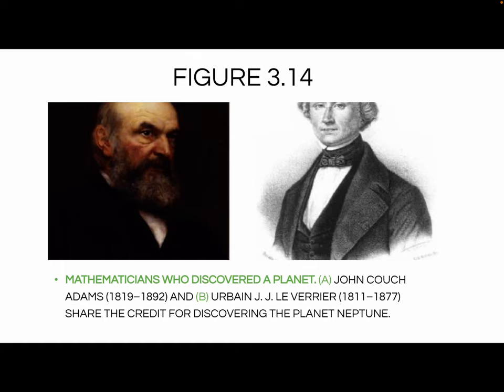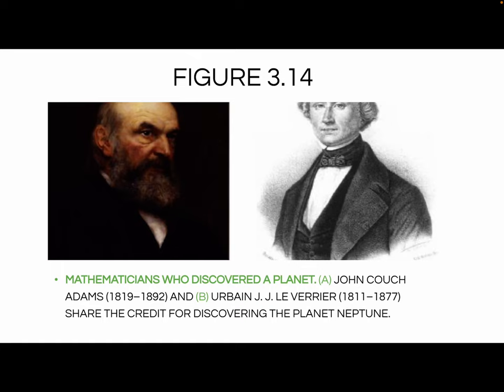We also have some mathematicians who discovered a planet. John Couch Adams and Urbain Le Verrier share credit for discovering Neptune. They were going through the math of planetary distances and noticed a separation — something beyond Saturn. They worked through the math and were actually able to predict Neptune. Many years later, once telescopes became strong enough, they confirmed Neptune was a real planet. They were able to predict it using math alone.